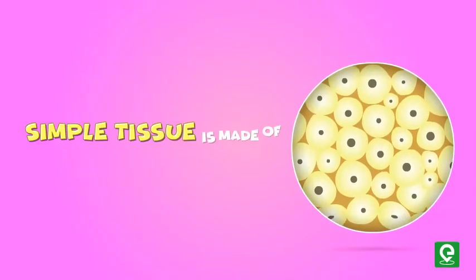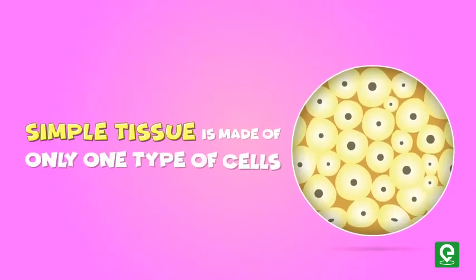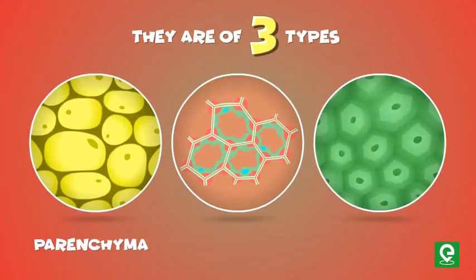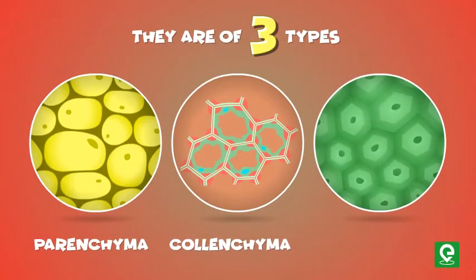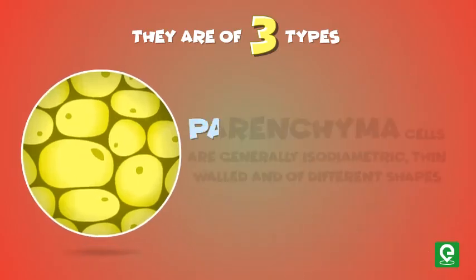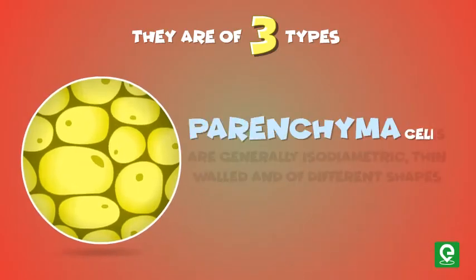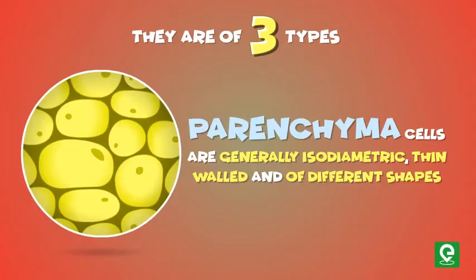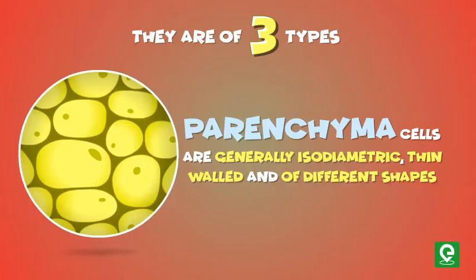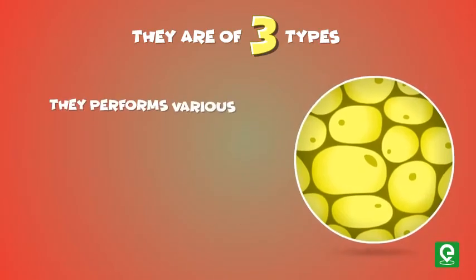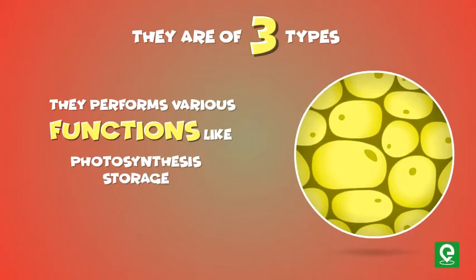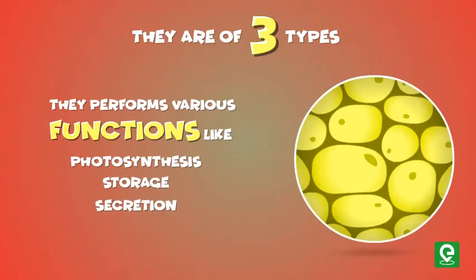Simple tissue is made of only one type of cells, and there are three types: parenchyma, colenchyma, and sclerenchyma. Parenchyma cells are generally isodiametric, thin-walled, and of different shapes. They perform various functions like photosynthesis, storage, and secretion.